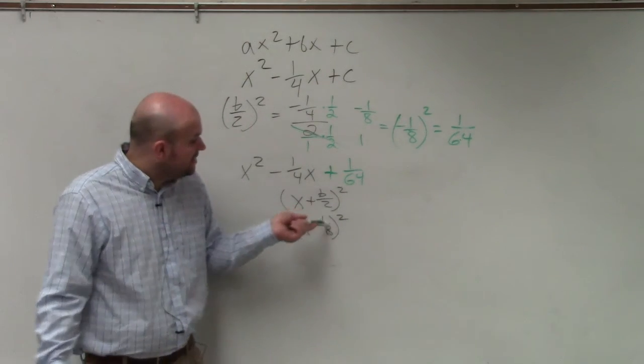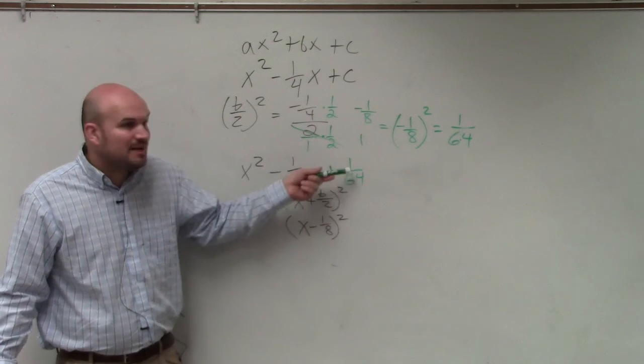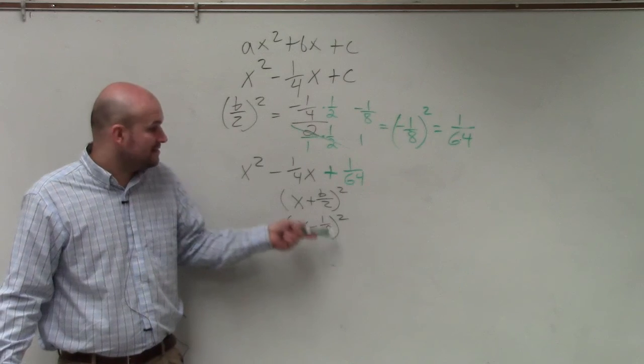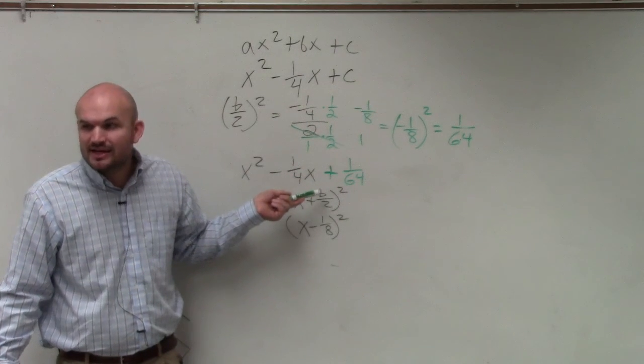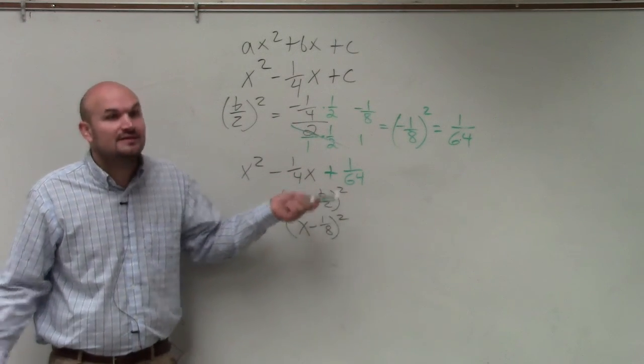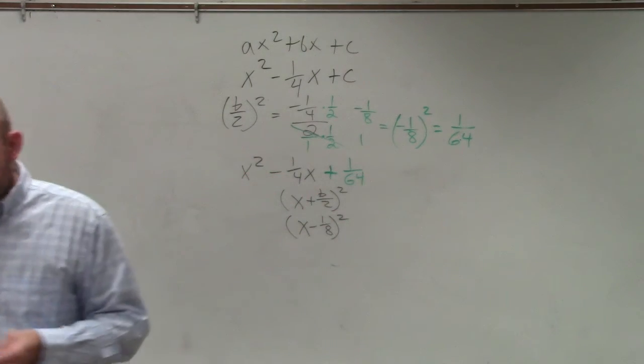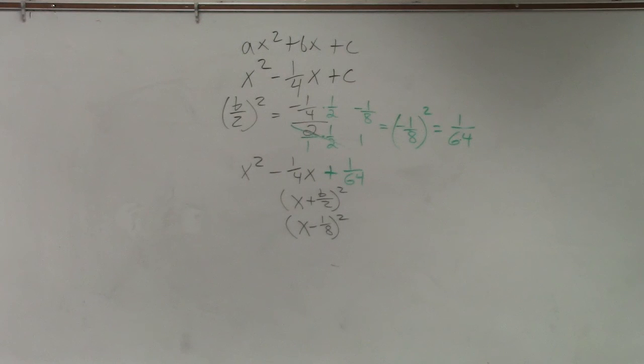And actually, you can check that out. Is negative one eighth times negative one eighth positive one 64? Yeah. Is negative one eighth plus negative one eighth negative one fourth? Yeah, negative one eighth plus negative one eighth is negative two eighths. Two eighths reduces to one fourth. So it works. So yes, you can factor all of those, but also remember that x plus b divided by 2 squared.